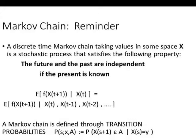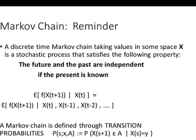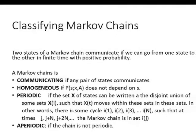A discrete time Markov chain taking values in some state space X is a stochastic process where the future and the past are independent given the present. So if t is the present, the expectation of any function of the future — in particular the next time step — equals the conditional probability given x_t, and given all previous values of the state. A Markov chain is defined through transition probabilities: the probability to move at time s from state x to any state in a set A.